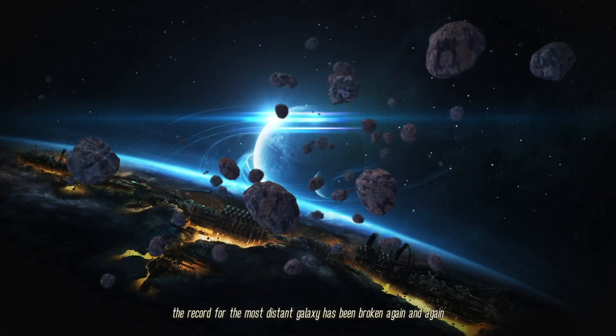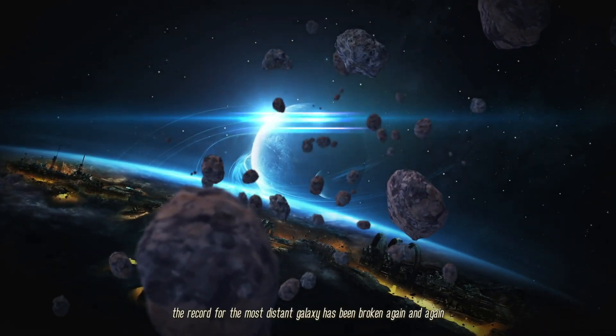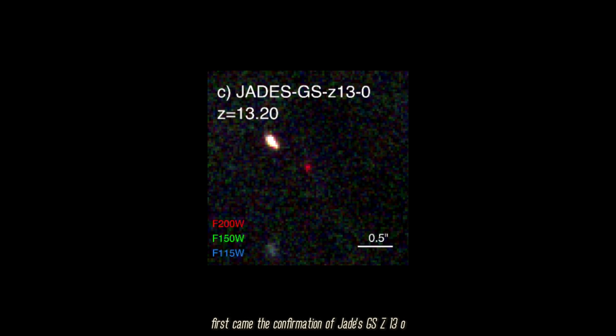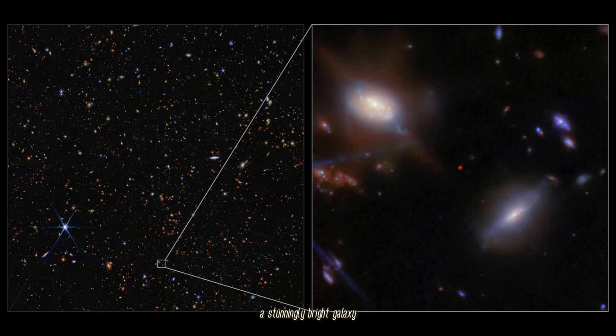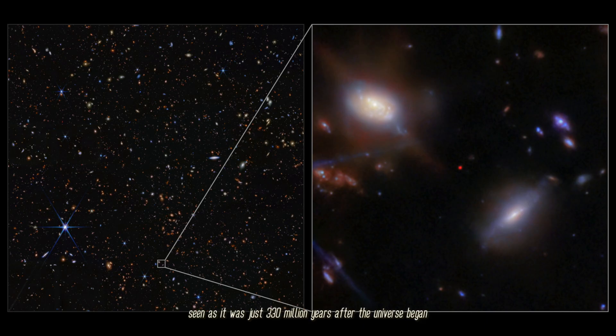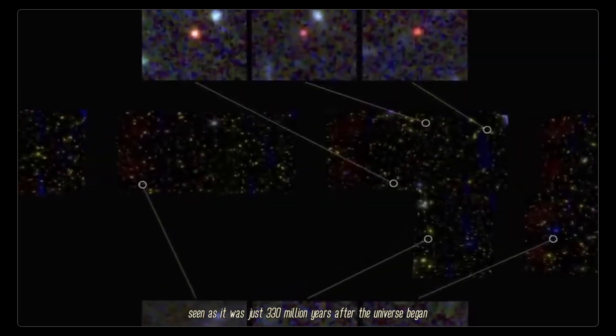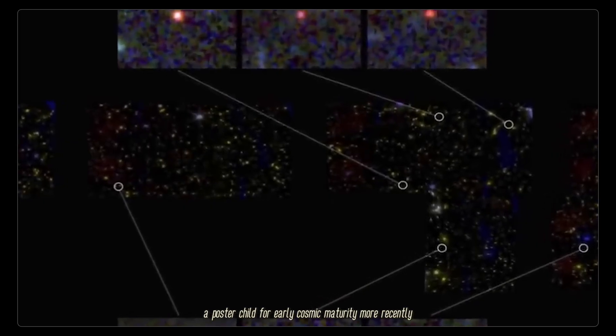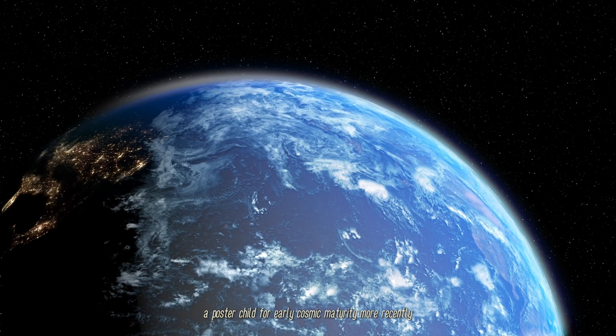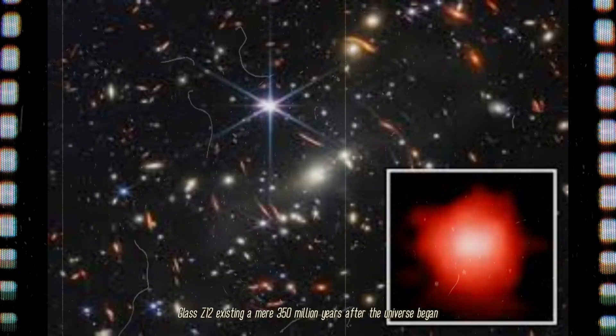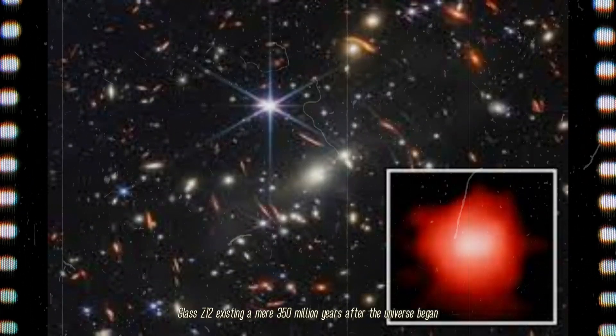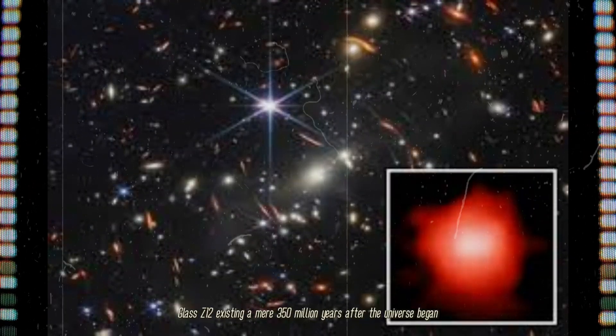The record for the most distant galaxy has been broken again and again. First came the confirmation of JADES-GS-z13-0, a stunningly bright galaxy seen as it was just 330 million years after the universe began. More recently, another was confirmed at even greater distance: GLASS-z12, existing a mere 350 million years after the universe began.